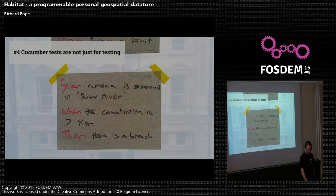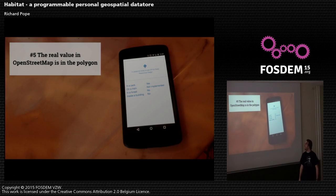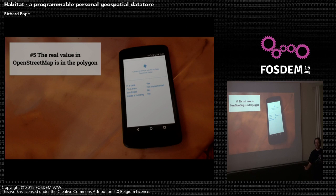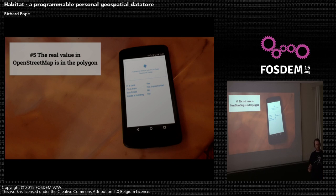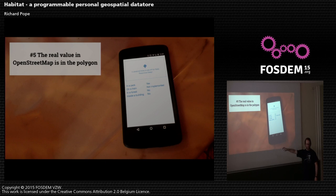So that's another idea I wanted to explore: can you reuse cucumber tests for things other than software testing? And finally, now that OpenStreetMap has got more complete, the value is less in the map and more in the polygons. You can think of OpenStreetMap as a series of land-use polygons covering pretty much the entire planet — and that's really powerful.